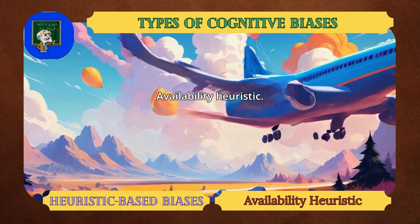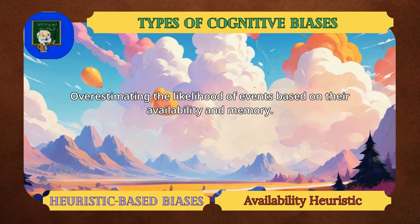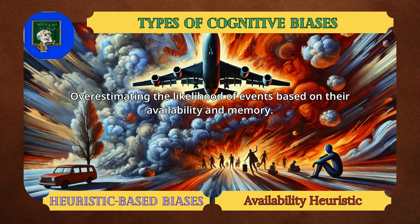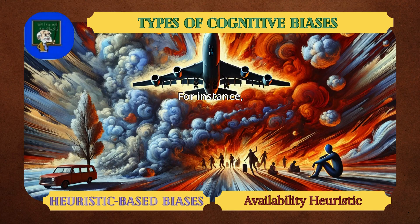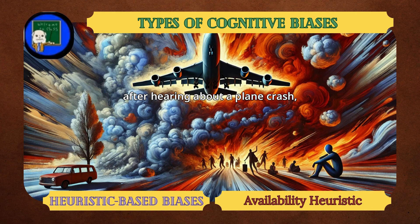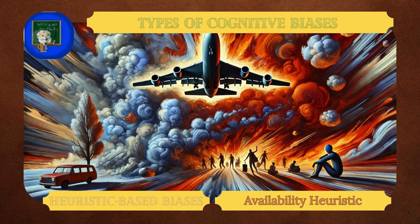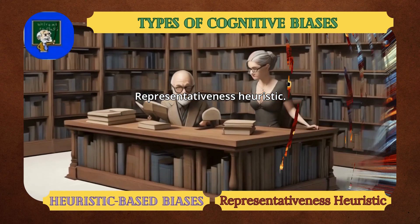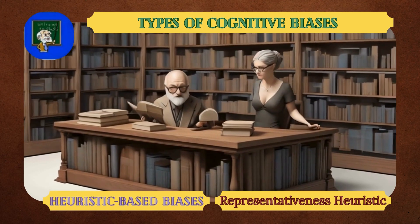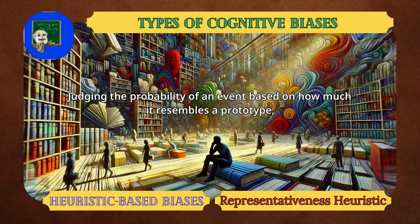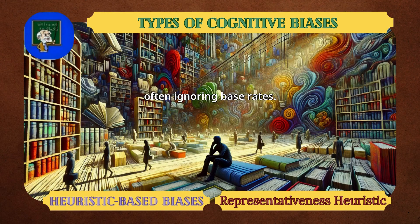Availability Heuristic: overestimating the likelihood of events based on their availability in memory. For instance, after hearing about a plane crash, one might perceive air travel as disproportionately risky. Representativeness Heuristic: judging the probability of an event based on how much it resembles a prototype, often ignoring base rates.